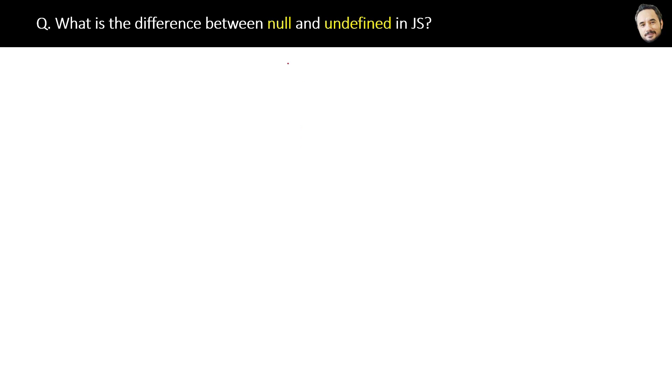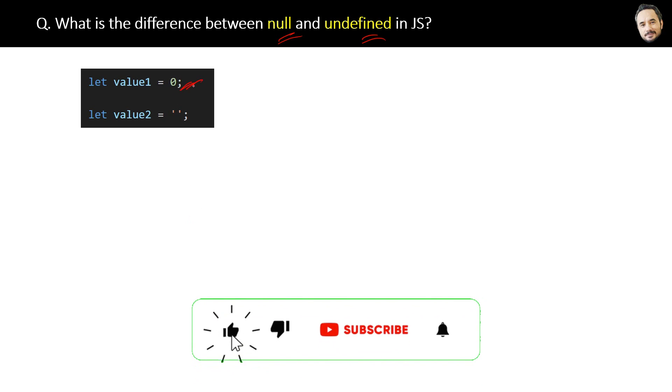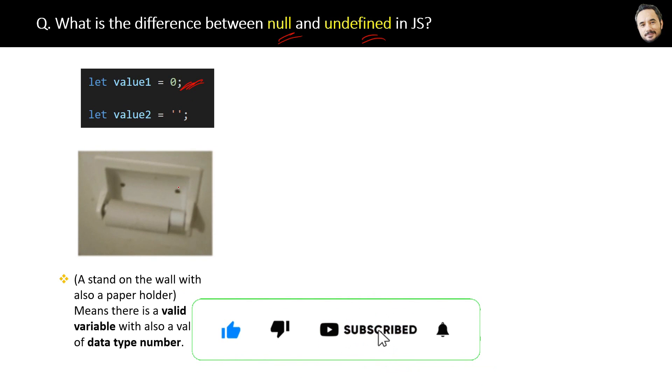What is the difference between null and undefined in JavaScript? Let's first understand the conceptual differences between them. Suppose you have a variable value of zero, this is something like a stand on the wall with a paper holder, that's an example. This means there is a valid variable with a value of the data type number, that is clear.